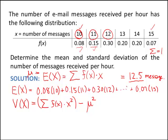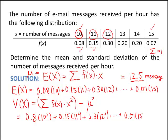So it's very similar to the calculation we have above, except we're going to square our x values. So this is 0.08 times 10 squared plus 0.15 times 11 squared plus 0.3 times 12 squared plus, we'll go all the way down, 0.07 times 15 squared.